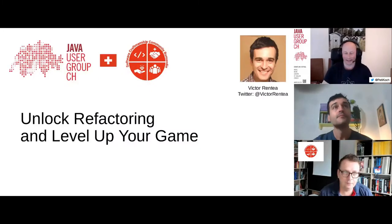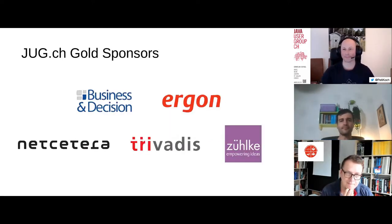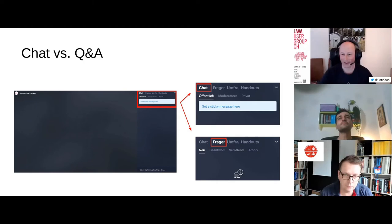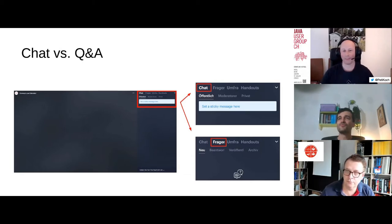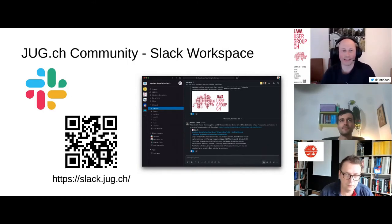Before we start, I have a couple of slides with some general information. Thanks to all the sponsors for their support. For you as participants, there's the possibility to use the chat — there's a tab on the right side. If you have a question, there's a question and answer section; just type in your question there and we will pick it up. To get in touch with the Java User Group Switzerland community, you can use the Slack workspace — the URL is on the slide or you can use the QR code.